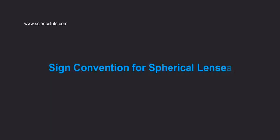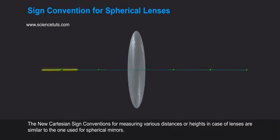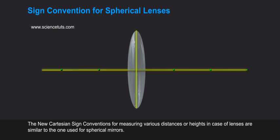Sign Convention for Spherical Lenses. The new Cartesian sign conventions for measuring various distances or heights in case of lenses are similar to the one used for spherical mirrors.